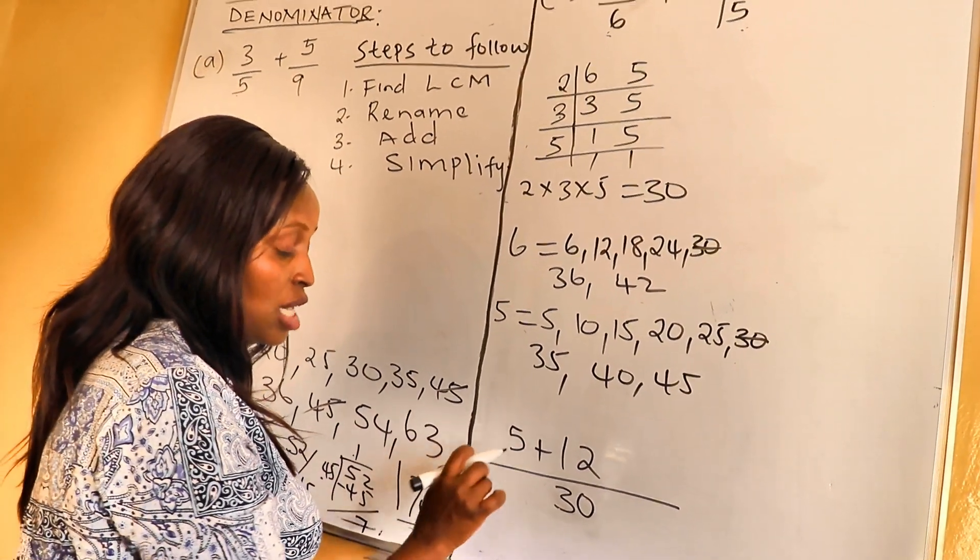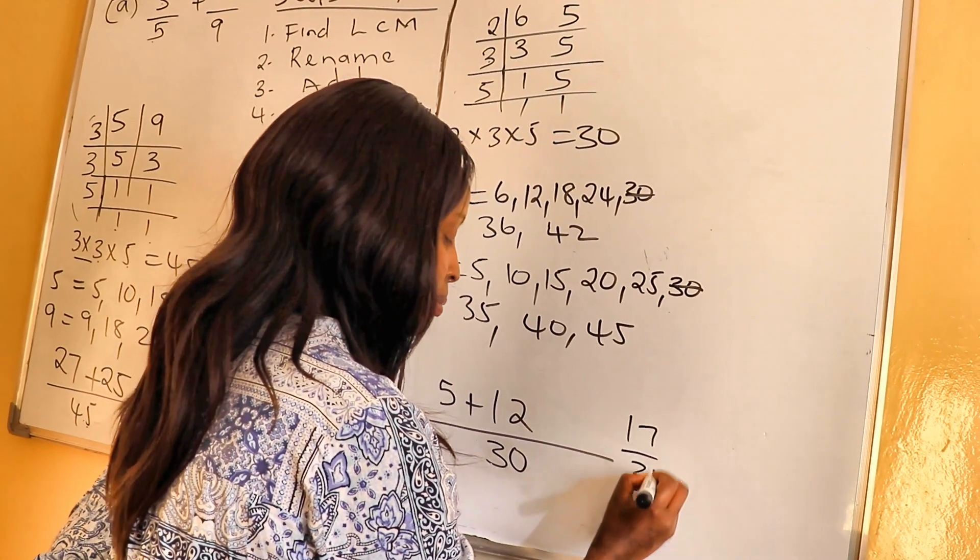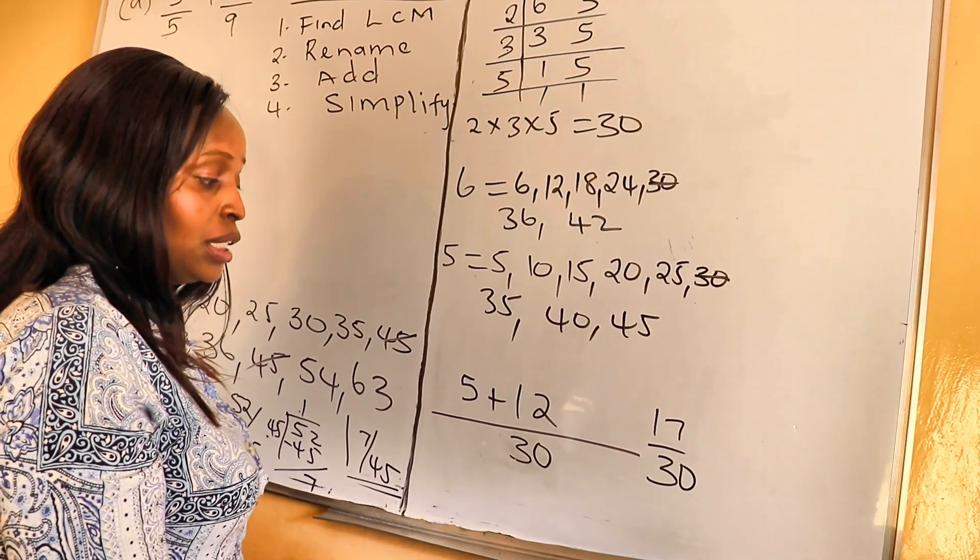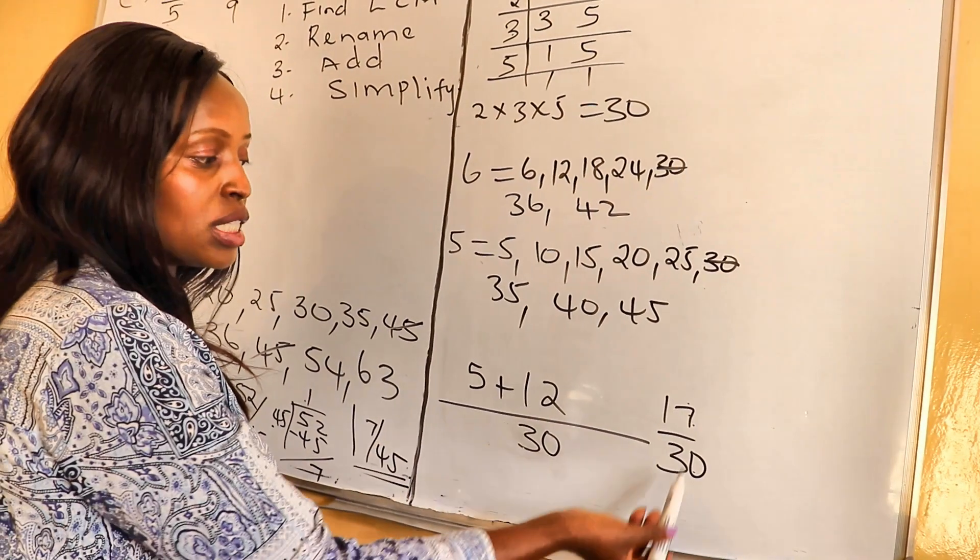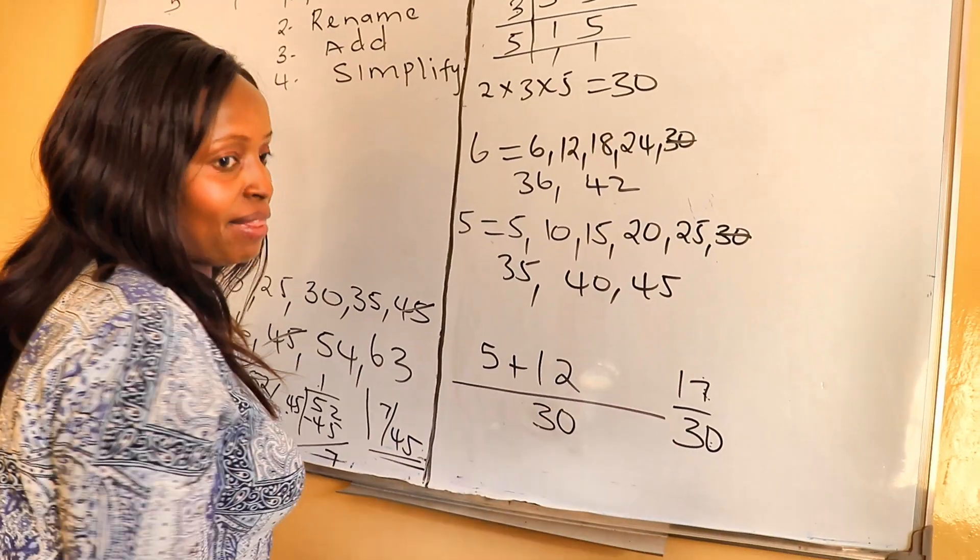The next step says we add. So 5 plus 12 is 17 out of 30. Now in this kind of a fraction, you don't need to simplify because 17 is odd and 30 is even, so they don't have a common divisor. You leave your answer like that.